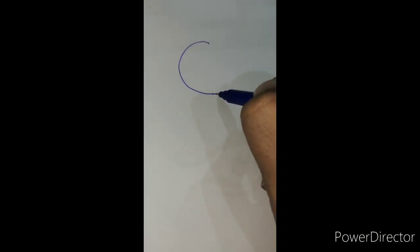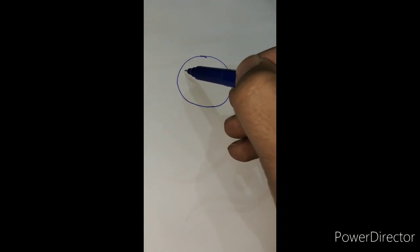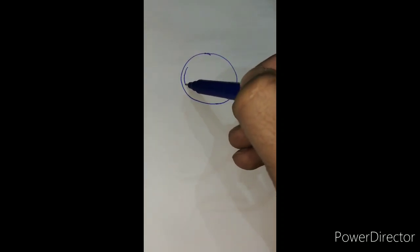Now suppose this is the optic disc which you are examining. You take it as 10 circles—divide it into 10 circles.